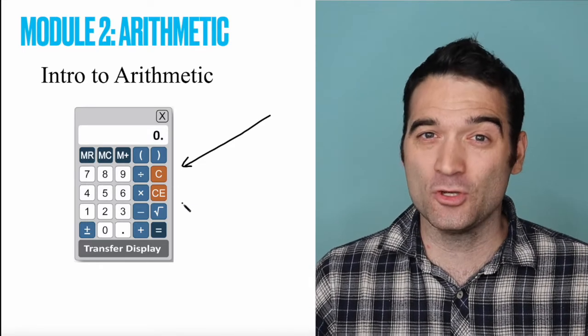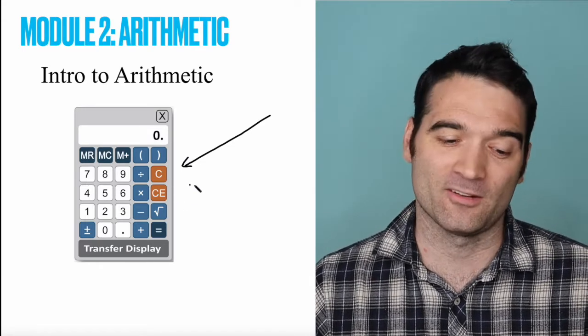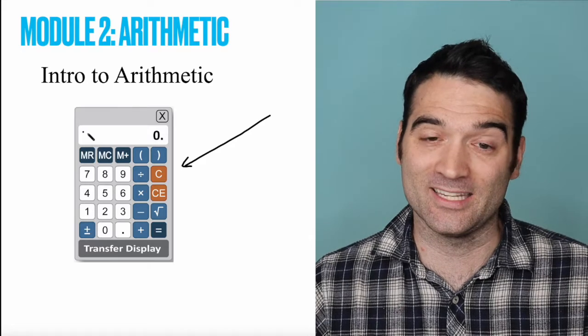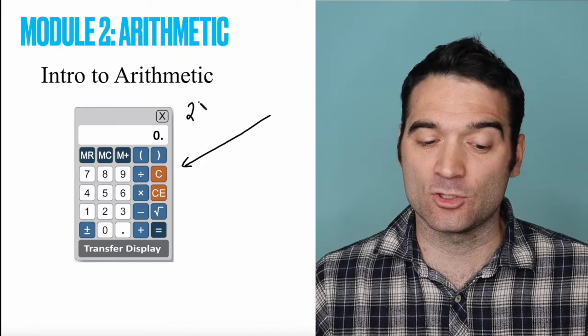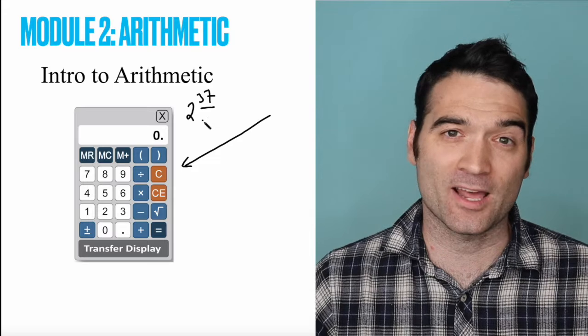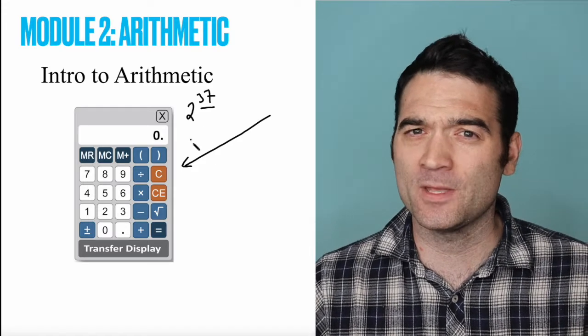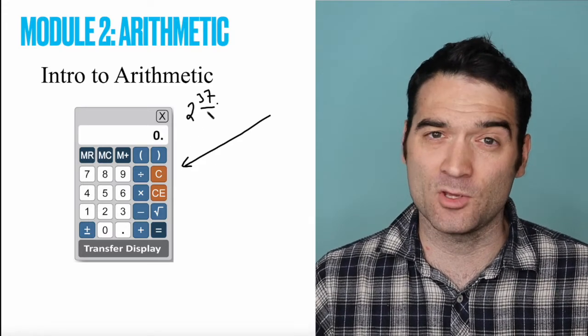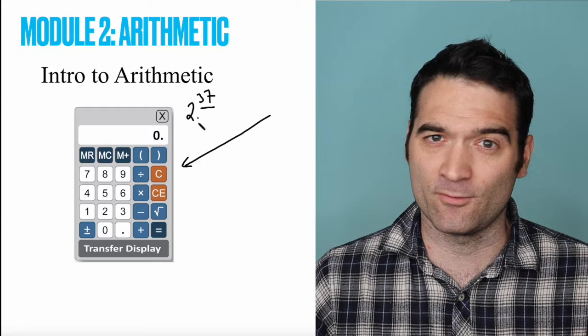That said, you should know the limitations of the calculator. For one thing, there are only eight digits. So if you get some wild number like 2 to the power of 37, and you see that on the test, just know that you won't be able to use your calculator to compute that. You're going to have to find some other creative way to solve it.